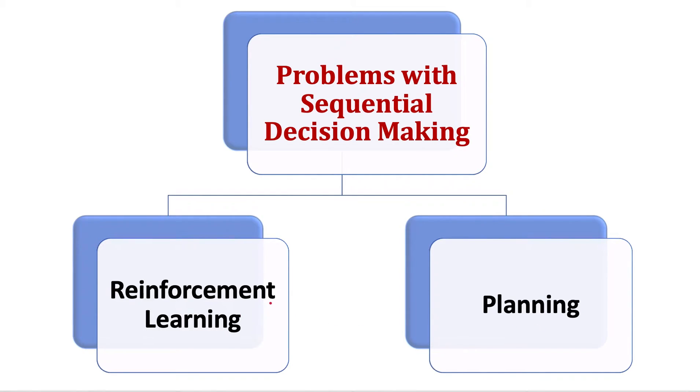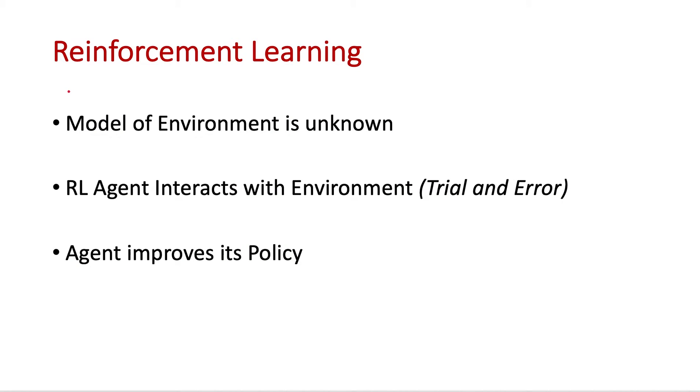In reinforcement learning problems, the model of the environment is unknown to the RL agent. So the RL agent has no idea how the environment functions. The RL agent interacts with the environment and tries to understand how the environment functions.